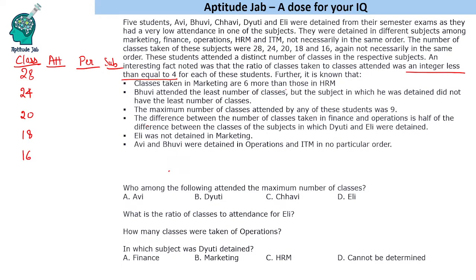The ratio is an integer less than or equal to 4, meaning maximum 4. One piece of information given is that the maximum number of classes attended by any of these students was 9, so maximum attendance is 9. For 28 classes, the attendance can only be 7, since the ratio is maximum 4 and maximum attendance is 9.